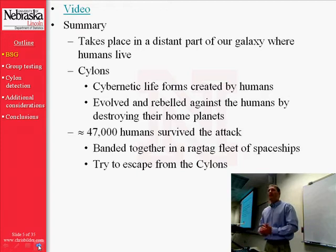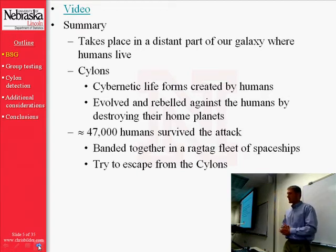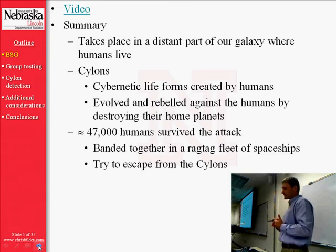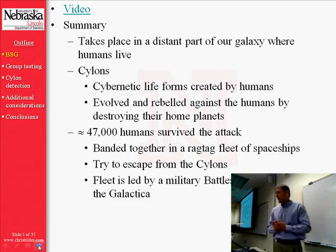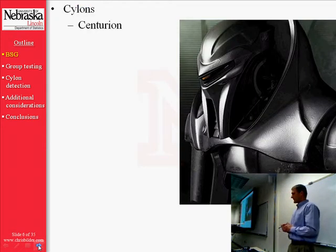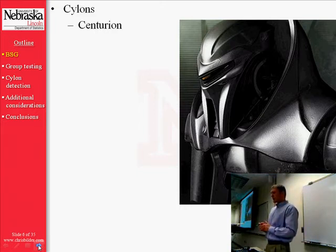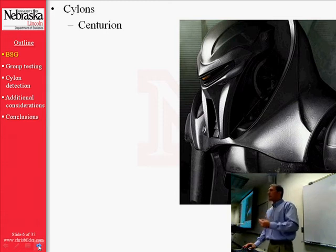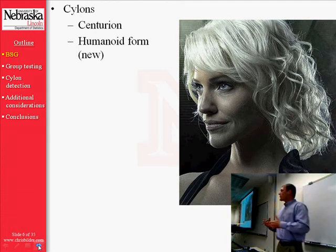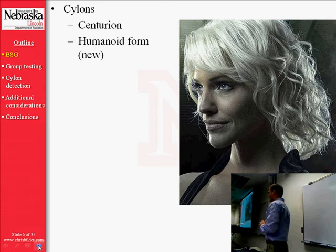In the end, only about 47,000 humans survived the attack by the Cylons. They all banded together in a ragtag fleet of spaceships trying to get away. The fleet is led by a military Battlestar spaceship named the Galactica — and thus that's where the name comes from. In the video you saw two different kinds of Cylons: the first is a Centurion, a metallic robot originally created by the humans. The Cylons evolved to a new humanoid form, which was originally unknown to the humans, and this is what led to the almost complete destruction of humanity.